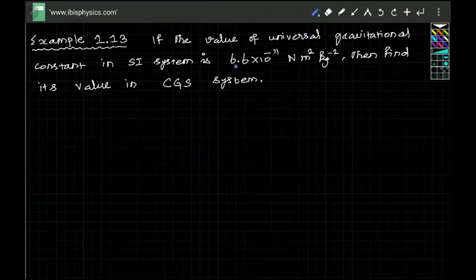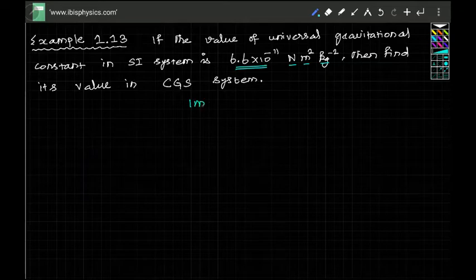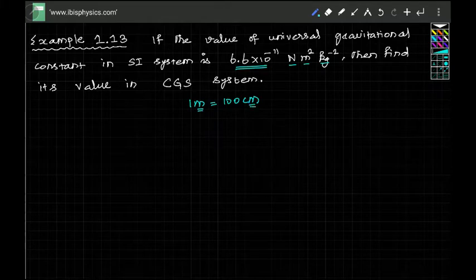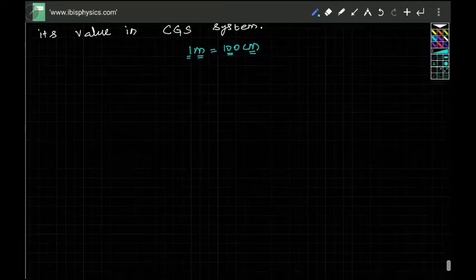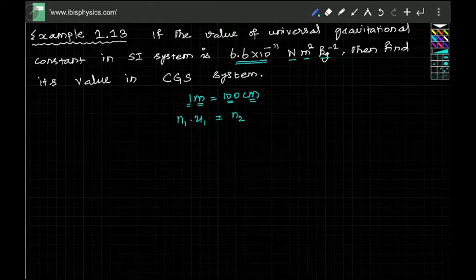The value of the universal gravitational constant is 6.6×10⁻¹¹ N·m²/kg² in the SI system. Find the value in the CGS system. The concept we are going to use: one meter equals 100 centimeters — so this holds true for any system of units: N1 × U1 = N2 × U2.